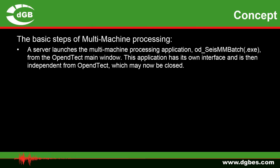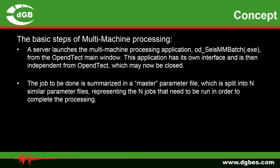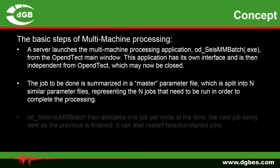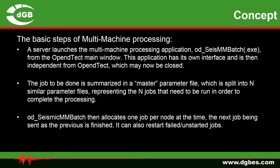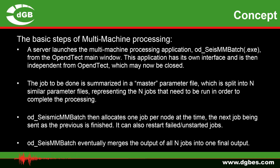The concept is as follows. The server launches the multi-machine processing application, which is the OD MM batch, from the OpenDTec main window. This application has its own interface and is then independent from OpenDTec, which can be closed. The job to be done is summarized in a master parameter file which is then split into N similar files representing the N jobs that need to be run. OD seismic MM batch then allocates one job per node at a time, the next job being sent as the previous is finished. It can also restart failed and unstarted jobs, and eventually merges the output of all N jobs into one final output.